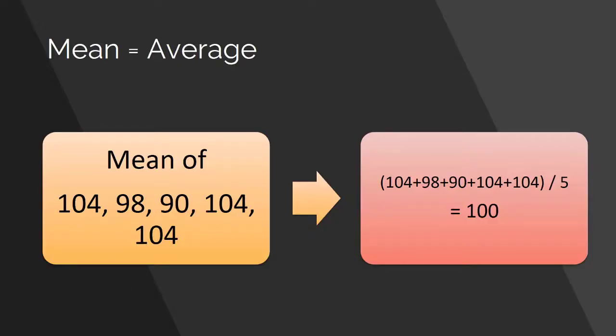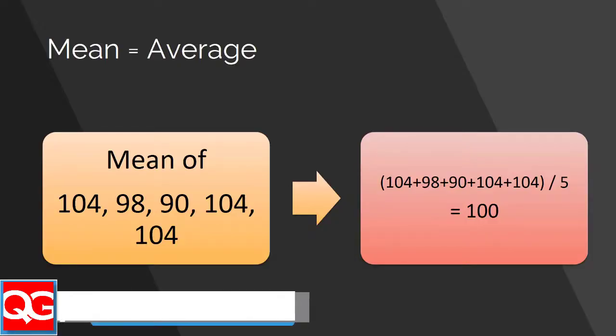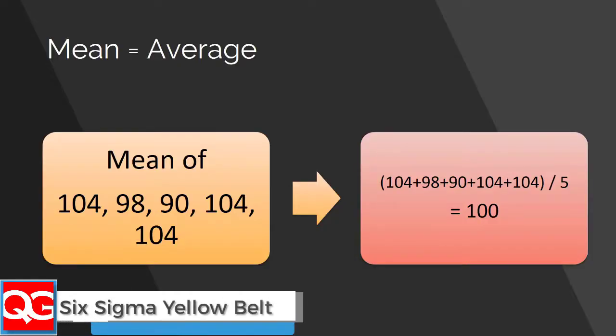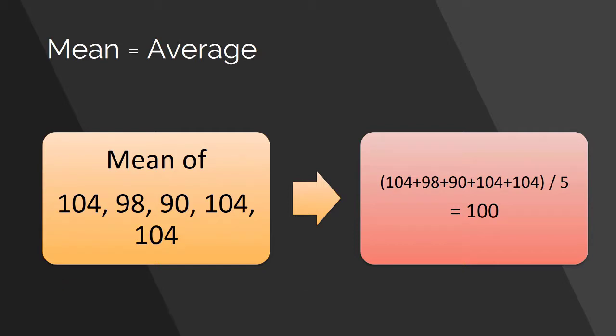As I earlier said, mean is commonly known as the average. Now in this particular simple example, if I ask you to find out the mean of these five numbers — the five numbers are 104, 98, 90, 104, and 104.